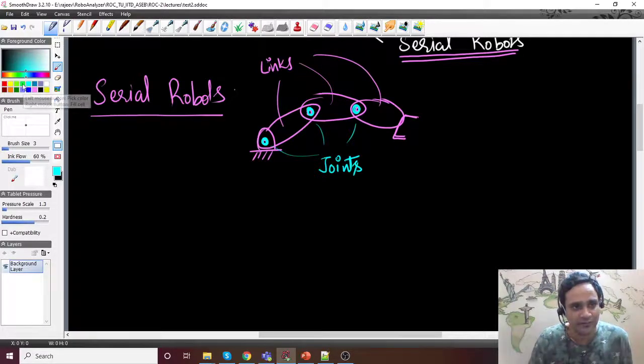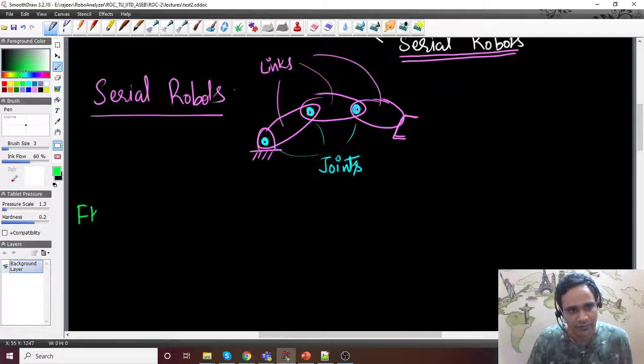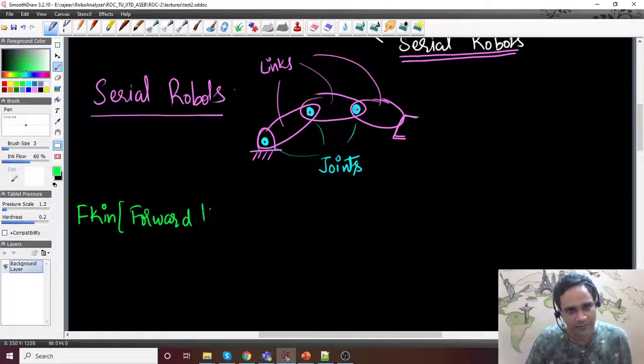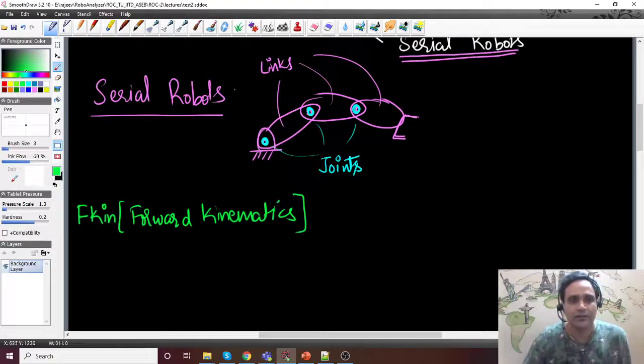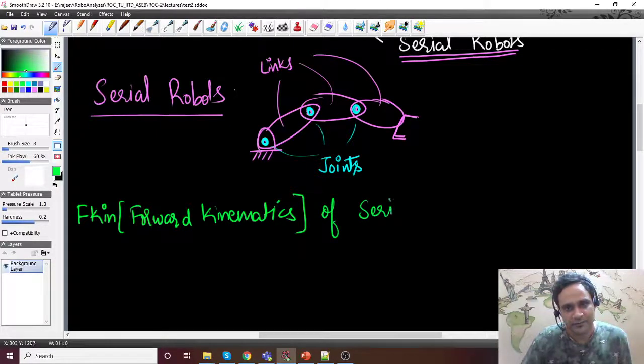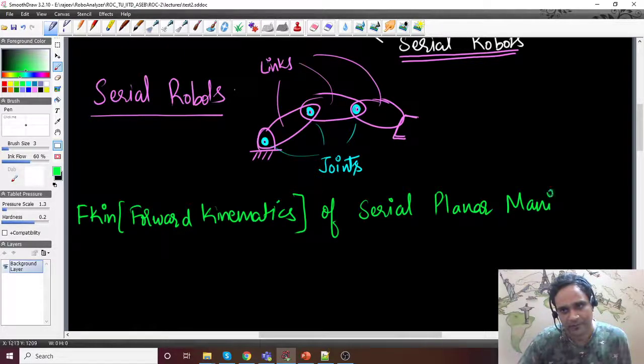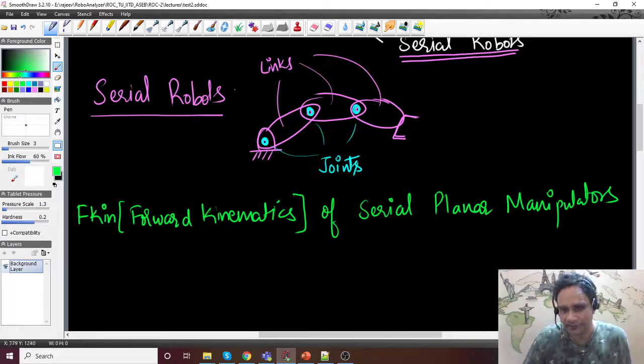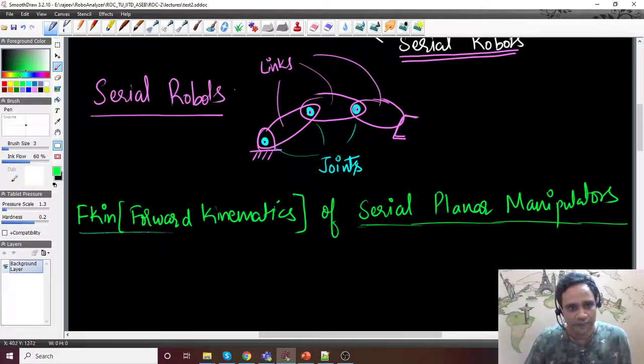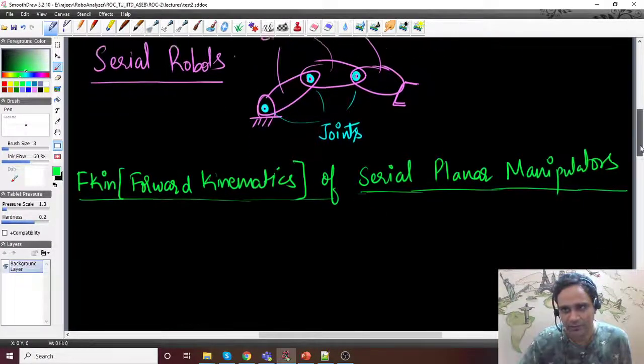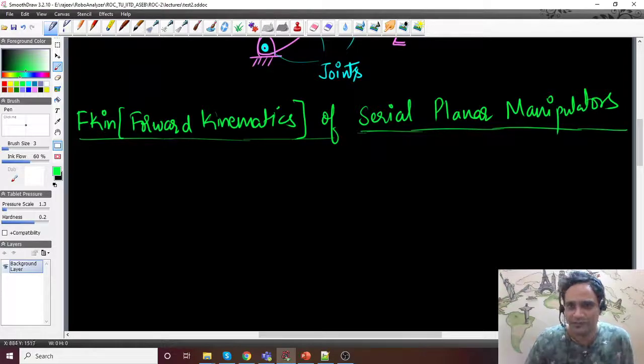I'll just hurry up here because I don't want to have too long videos. So what do we deal with? Forward kinematics of serial robots. FKIN stands for forward kinematics of serial planar manipulators, or planar serial manipulators, depending on how you write that down.